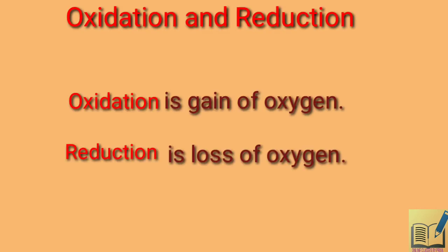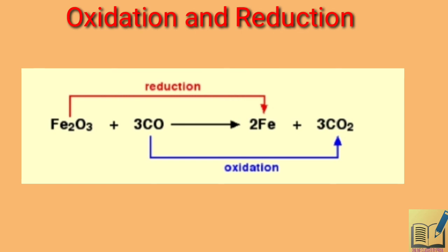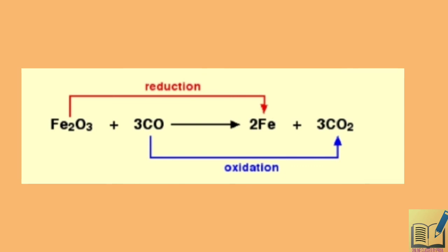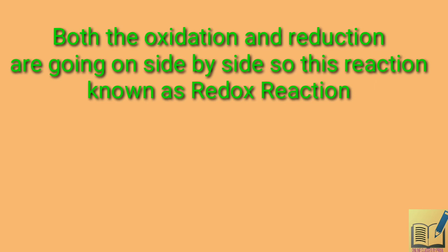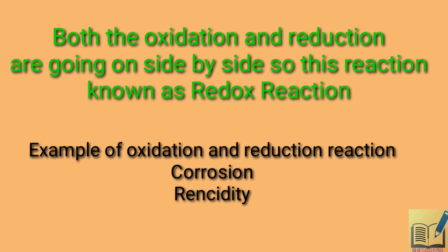Now we will talk about oxidation and reduction reactions. Oxidation and reduction can be tricky, but here is the best way to remember: if oxygen is gained, then it is oxidation; if oxygen is lost, then it is reduction. For example, in Fe₂O₃ reacting with CO, the iron oxide loses oxygen — that is a reduction. The carbon monoxide gains oxygen to become carbon dioxide — that is oxidation. You can see that oxidation and reduction both happen together, so we call this a redox reaction.